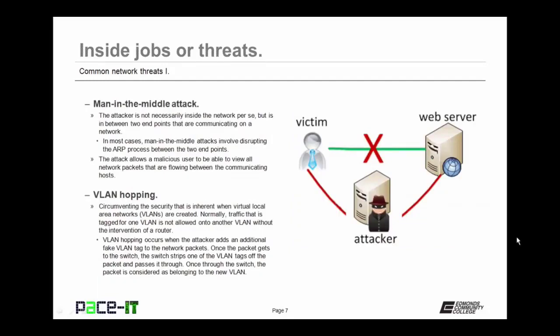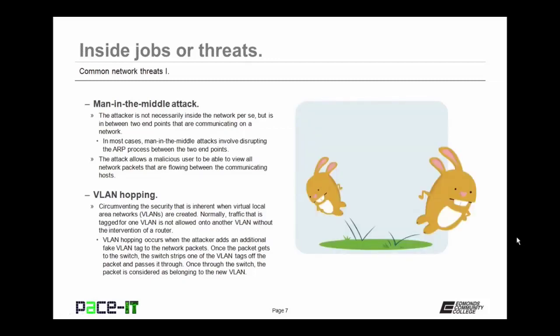The man-in-the-middle attack is another threat. The attacker is not necessarily inside the network per se, but is in between two endpoints that are communicating on a network. In most cases, the man-in-the-middle attack involves disrupting the ARP process between the two endpoints. The attack allows a malicious user to view all network packets that are flowing between the communicating hosts. Often, a man-in-the-middle attack is used to gain sensitive information like network credentials.